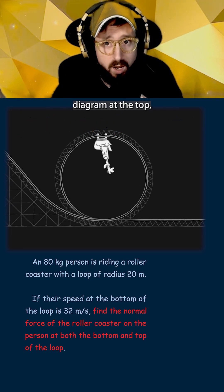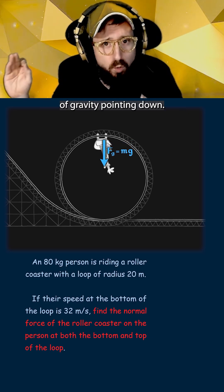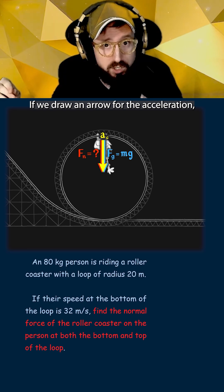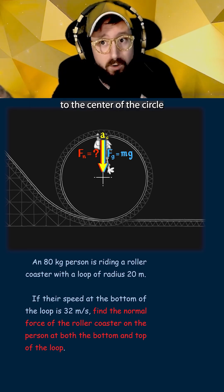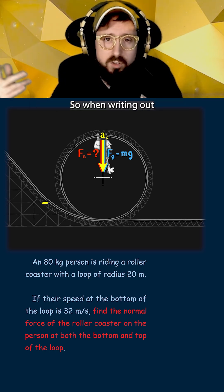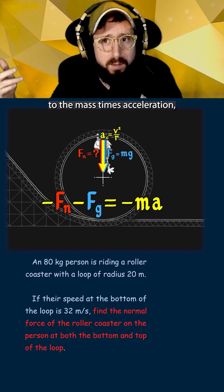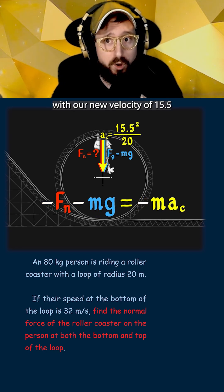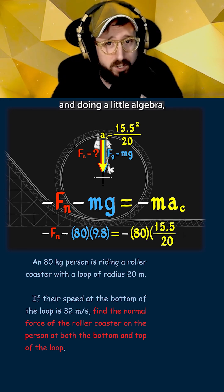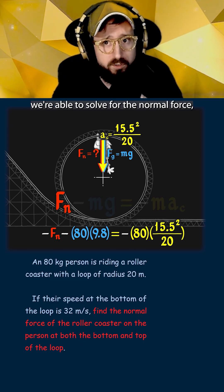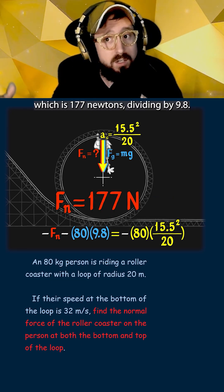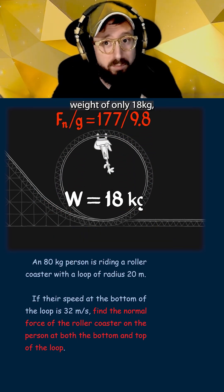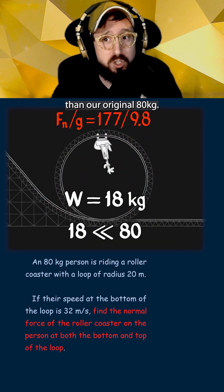Now drawing our force diagram at the top, we have the same force of gravity pointing down, but now the normal force from the track also points down. Drawing an arrow for the acceleration, we see that pointing to the center of the circle also points in the negative direction. So when writing out the sum of forces equal to mass times acceleration, everything will be negative. Plugging in V squared over R with our new velocity of 15.5 and doing a little algebra, we solve for the normal force, which is 177 newtons. Dividing by 9.8, this gives us an apparent weight of only 18 kilograms, which is much lighter than our original 80 kilograms.